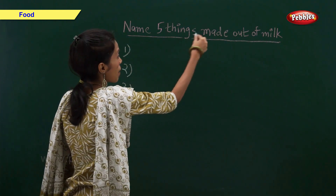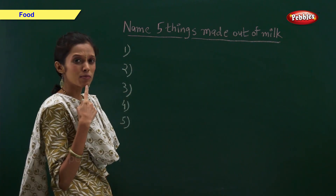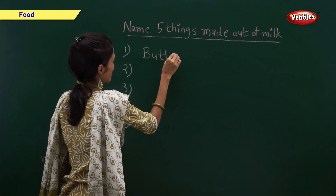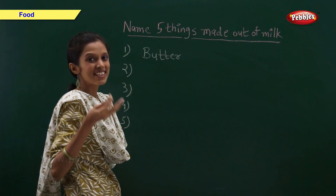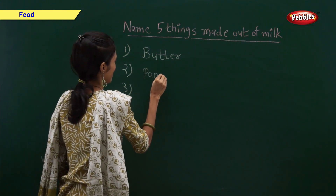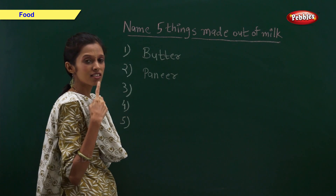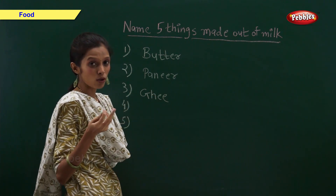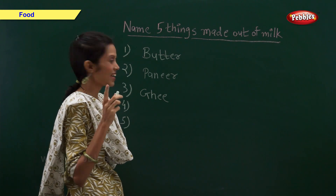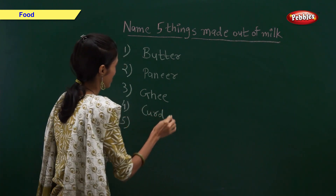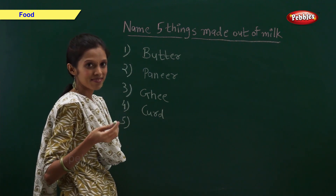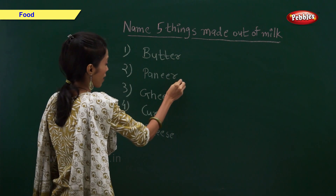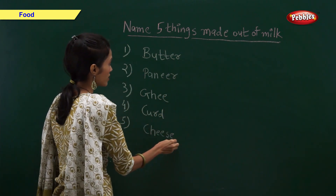Name five things made out of milk. Can you tell me what is made out of milk? Butter. What else is made out of milk? Paneer. Ghee. What else is made out of milk? Curd. What else? Cheese. So, butter, paneer, ghee, curd, and cheese are made out of milk.